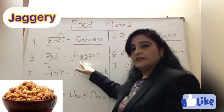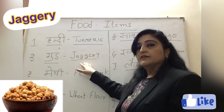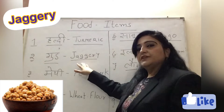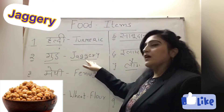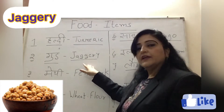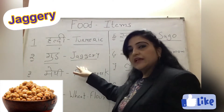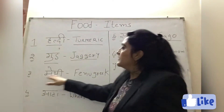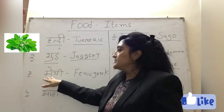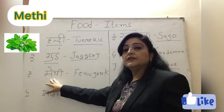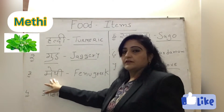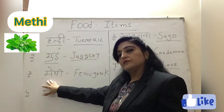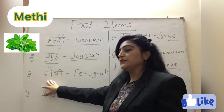Atta — A, G, E, R, Y — Atta. Next food item friends: Methi, Methi. We use this simply in English.